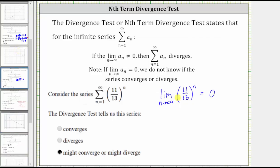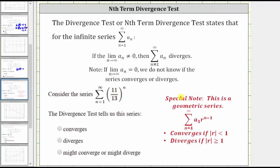One more thing to mention about this series: if you're already familiar with infinite geometric series, you may recognize that this is an infinite geometric series, and because the absolute value of r is less than one — which in our case is 11 thirteenths — the series does converge. But we do not know this by the divergence test; we would know this from the infinite geometric series test. So from the divergence test, we can only conclude that the series might converge or might diverge.